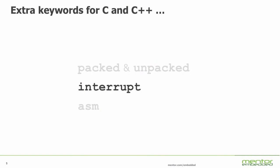The next keyword is interrupt. Interrupt simply enables you to declare a function as being an interrupt service routine, which means the compiler adds the extra bits of code needed to effect an interrupt service. And lastly there is the asm keyword. This enables you to insert small fragments of assembly language code to implement functionality that isn't available in the language itself. That really covers most eventualities and enables us to use the language in an efficient kind of way.